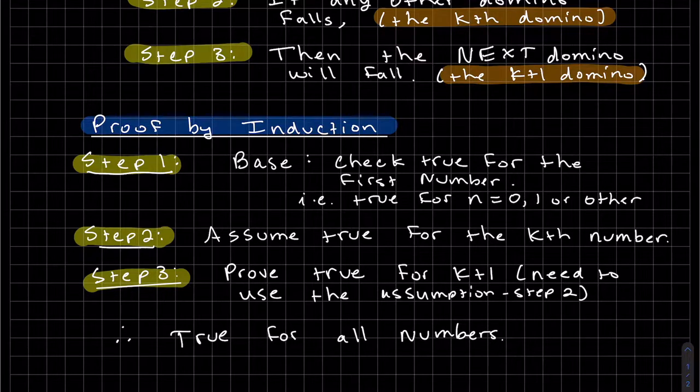So our first step is to check our base, make sure our base is true. So our base could be the first value, the first number, which could be 0 or 1, or it could be some other number. The second step is we assume that the statement is true for the kth number. Basically, that's your if. Your if is always your assumption.